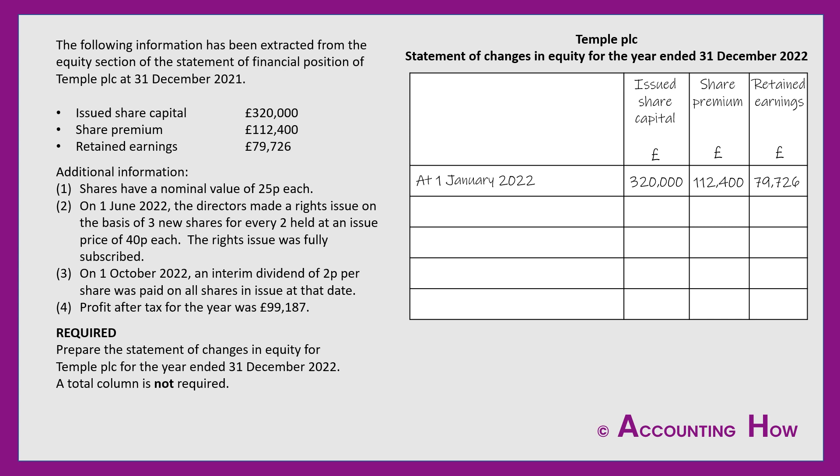The shares have a nominal value of 25 pence each — nominal value is sometimes referred to as face value. The important thing to remember is that issued share capital is always recorded at the nominal value, and that will be important in a moment. On 1st June 2022, the directors made a rights issue on the basis of three new shares for every two held, at an issue price of 40 pence each. The rights issue was fully subscribed, meaning all existing shareholders took up the right to buy these extra shares.